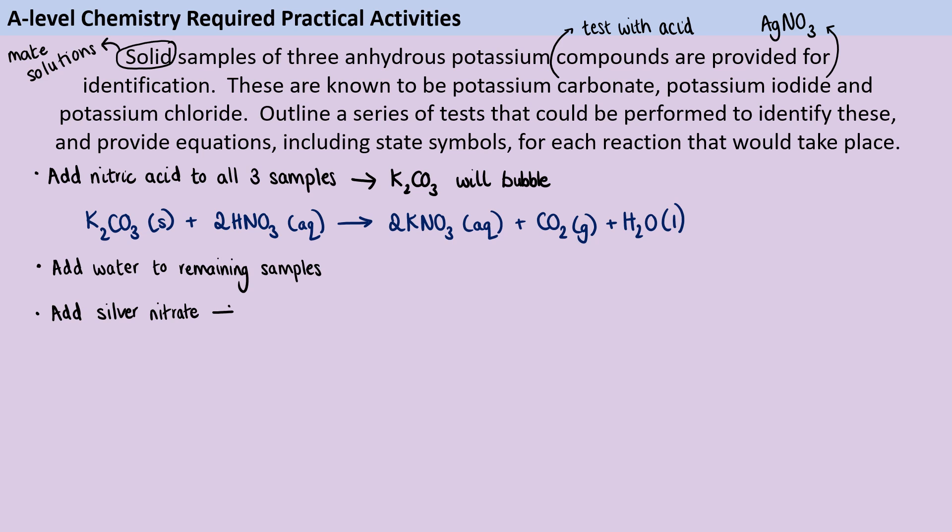And what we're expecting to see when we do add that is that if we've got the potassium chloride, then we'll see a white precipitate. So again, here we need to give our equation. And as you can see, the silver chloride, it's a precipitate, so it's going to be a solid and that's included in there. And you could of course give ionic equations rather than full symbol equations. So we could remove the spectator ions that are not part of this.